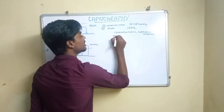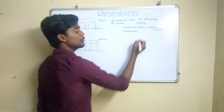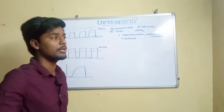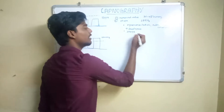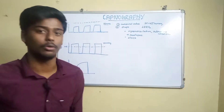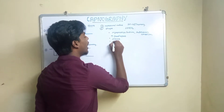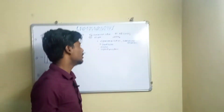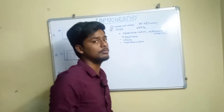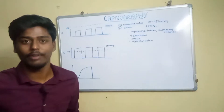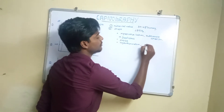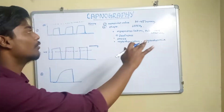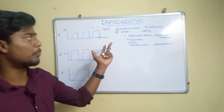Increased dead space — dead space leads to less ETCO2 value. This is the ventilation group. In circulation, cardiogenic shock — in shock, the circulatory system is compromised, so ETCO2 value is less. In metabolism, hypothyroidism — thyroid activity and metabolic activity are less, so ETCO2 is lower. Hypothermia — the body temperature is lower, so ETCO2 value is lower.